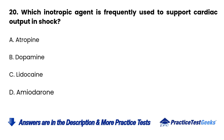Question 20. Which inotropic agent is frequently used to support cardiac output in shock? A. Atropine. B. Dopamine. C. Lidocaine. D. Amiodarone.